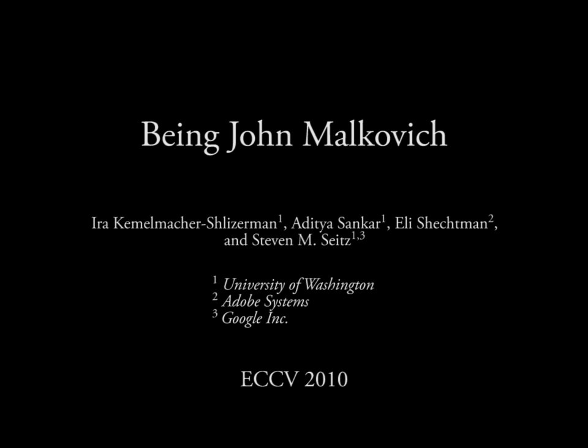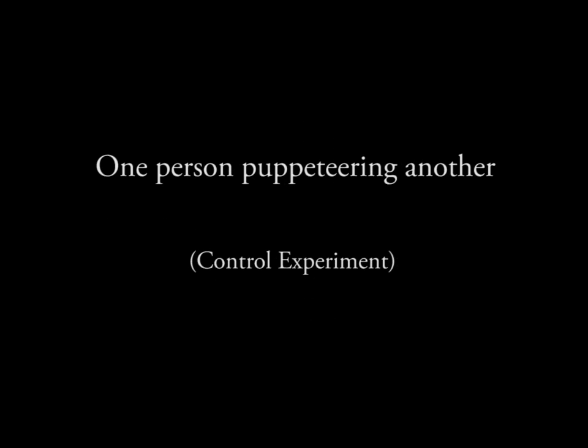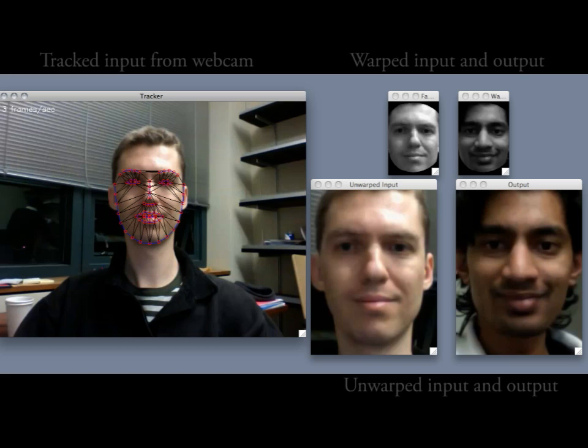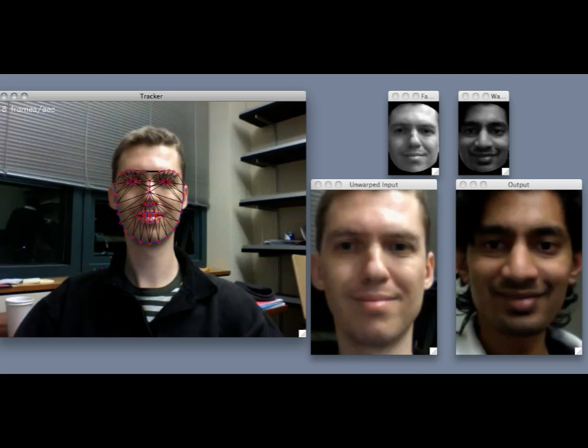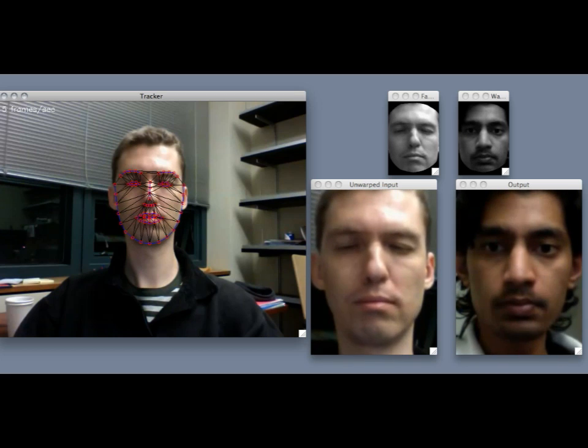In this video, we demonstrate a technique for retrieving photos of a person with similar facial expression as a query image. Using a webcam as an input, our approach enables a user to control another person's face in real time, allowing a form of puppetry.